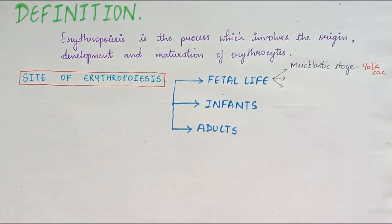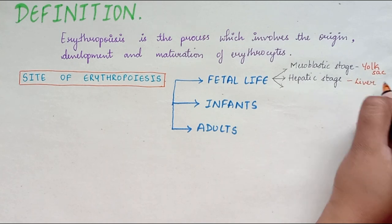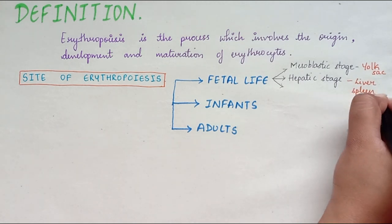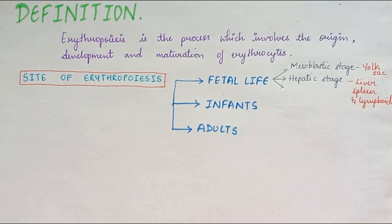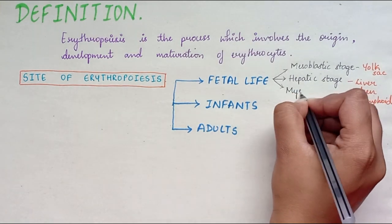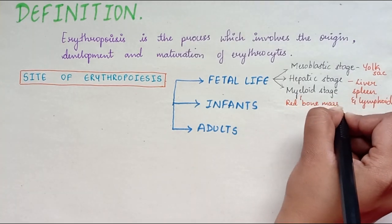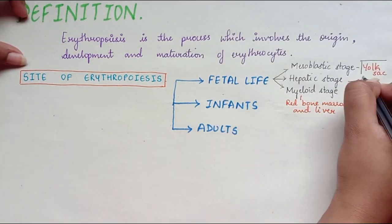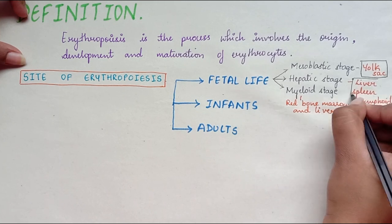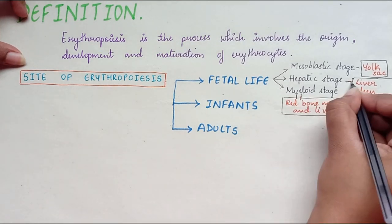Mesoblastic stage: RBCs are produced in the mesenchyme of the yolk sac. In the hepatic stage, it is produced in the liver, spleen and lymphoid tissues. And in the myeloid stage, it is produced in red bone marrow and liver.